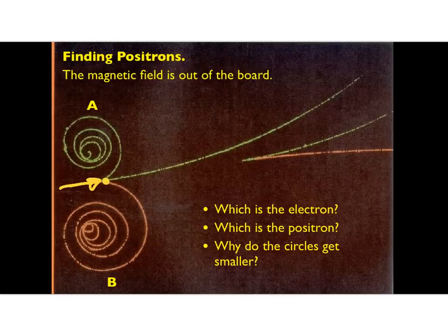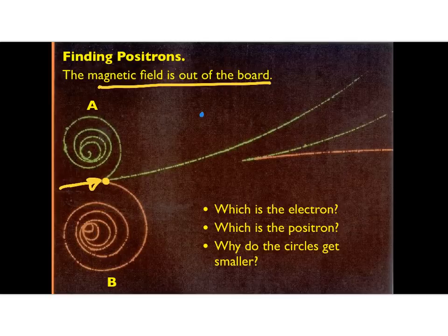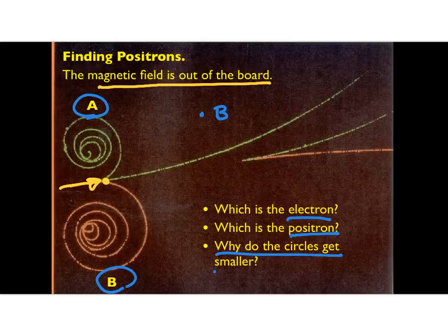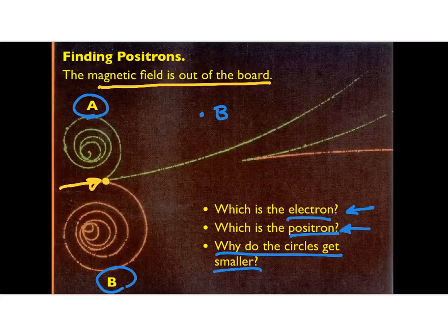My question is: which of these particles, A or B, is the electron and which is the positron? And why do the circles get smaller? I know you're thinking: Brian, you're asking me to remember magnetic field stuff from before spring break. But our exam stretches back to all those topics, so I want you to review and think about this. Take a minute to reason about it.